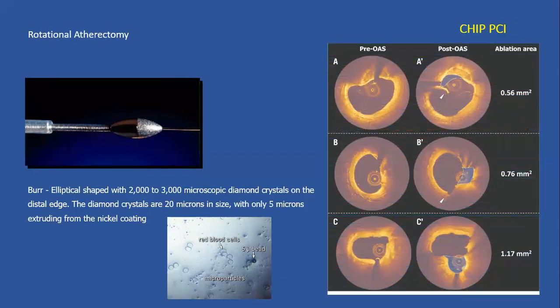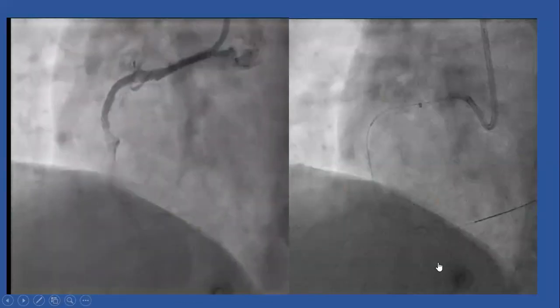If you look inside the vessel after rotational atherectomy, a successful result leads to something called a rubber duck effect — meaning the burr went through and caused a few fractures, indicating a successful procedure.